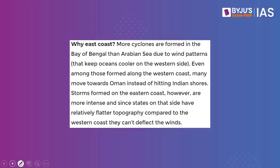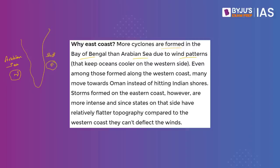Why is the eastern coast always hit by tropical cyclones compared to the western coast? The Bay of Bengal lies on the eastern side and the Arabian Sea on the western side. More cyclones form in the Bay of Bengal than in the Arabian Sea due to wind patterns that keep the oceans cooler on the western side. Even among cyclones formed along the western coast, many move towards Oman instead of hitting Indian shores.